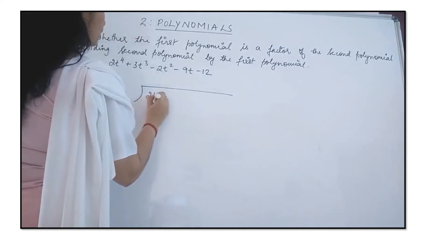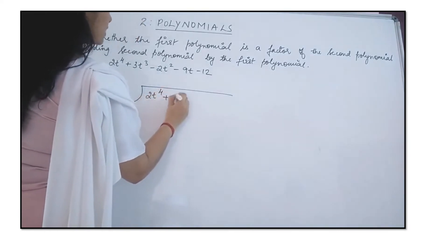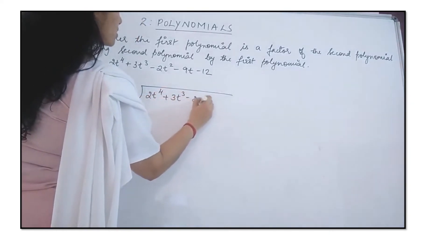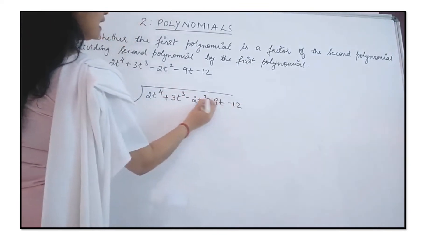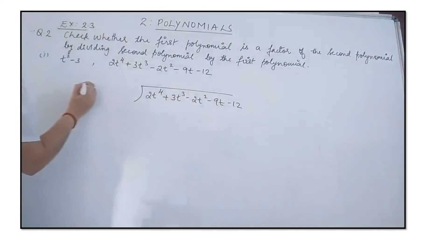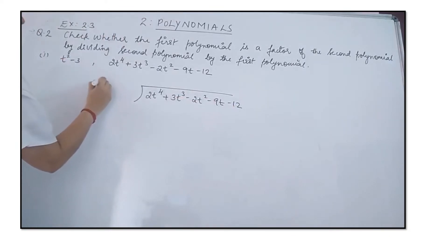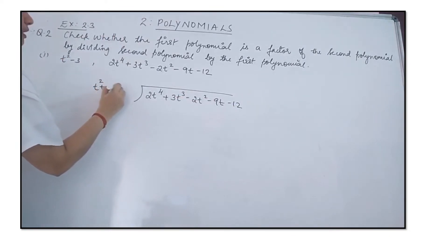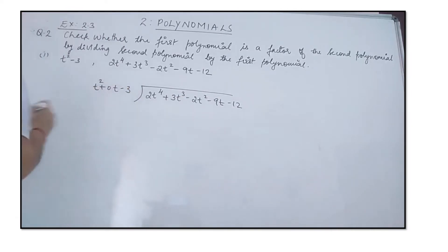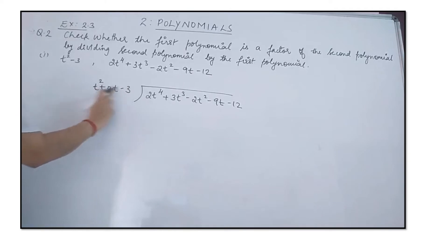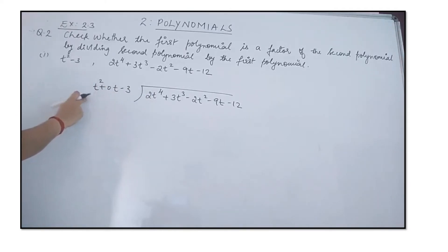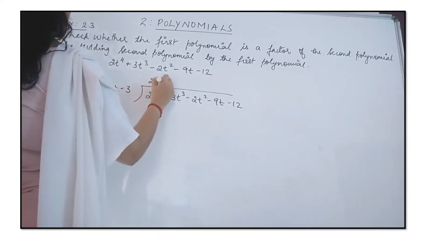We write 2t⁴ + 3t³ − 2t² − 9t − 12 inside, and the divisor t² − 3 is standardized and written as t² + 0t − 3. By dividing the first term of the dividend by the first term of the divisor: 2t⁴ divided by t² gives 2t².